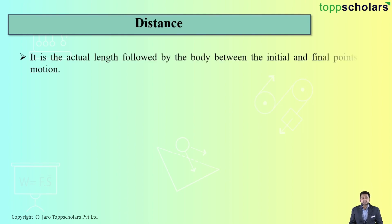Distance is nothing but the actual length followed by a body between the initial and the final points, or in simple words you can call it as the actual distance traveled by the body from the initial to the final point.